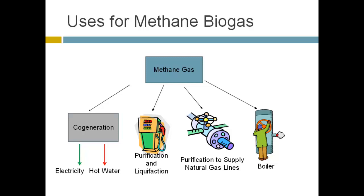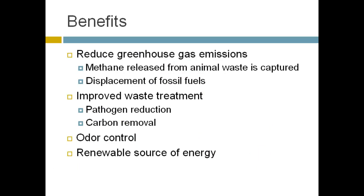The most common use of the methane gas is cogeneration, generating electricity while the generator's heat can warm the digester. Some farm facilities have also started looking at compressed natural gas for vehicles. The methane can also be purified and supplied to natural gas lines. The simplest use, if possible, is in a boiler — requiring the least cleanup — and if there's any nearby industry or on-site boiler use, that's a great application for the biogas.